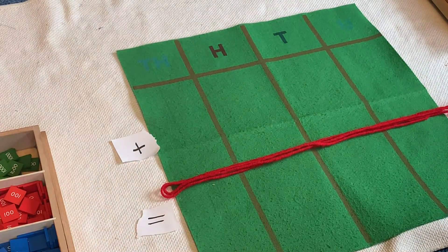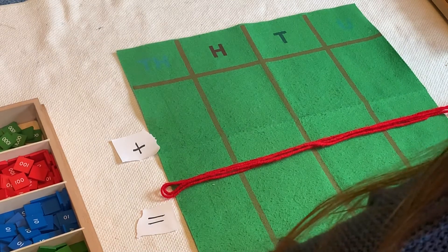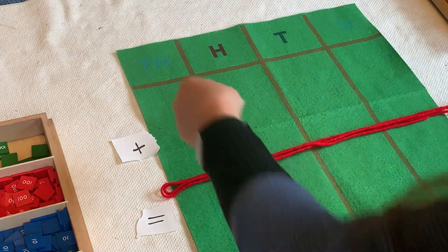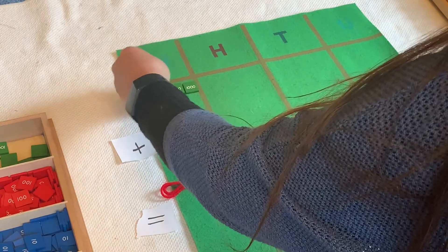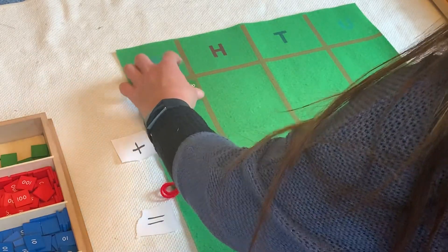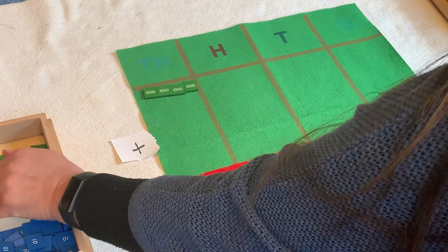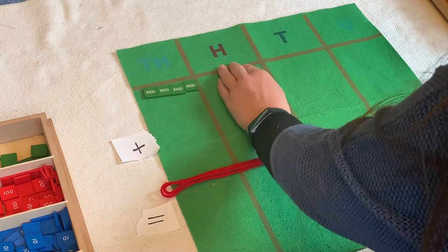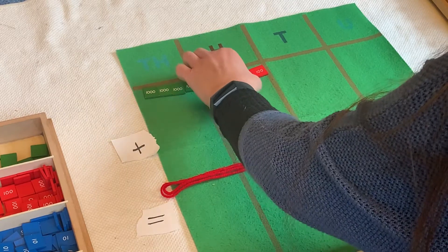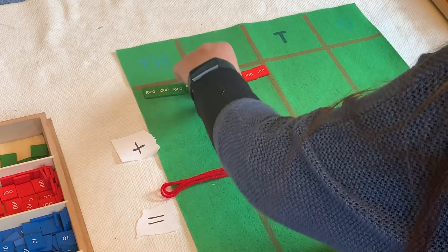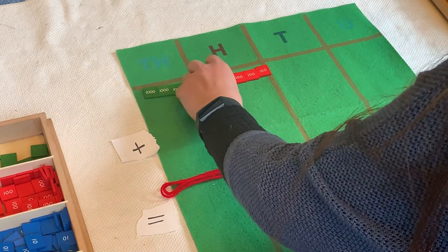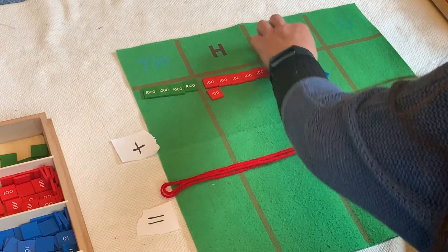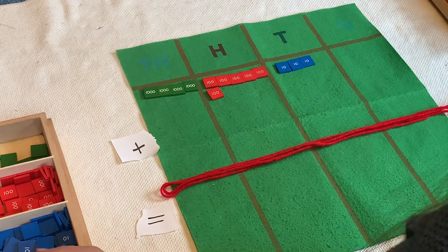All right, so first I'm going to build my number, 4,638. So I'm going to get my stamps, and you all have your own stamps that you have printed and cut out, and you have at your house. So here's 4,600. And you all know I like everything to be nice and neat so that we can see them easily. And I need 30, 10, 20, 30, and 8.